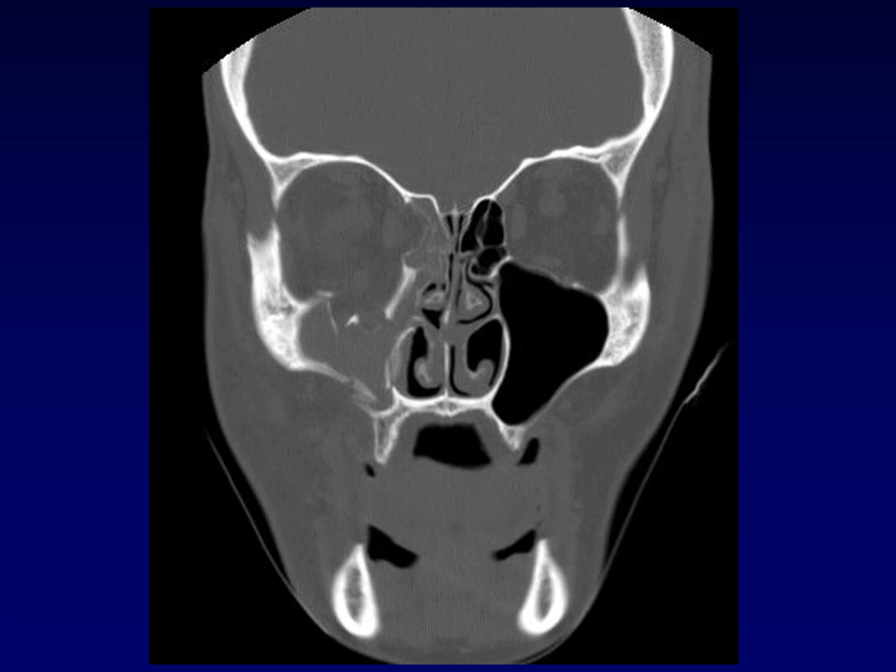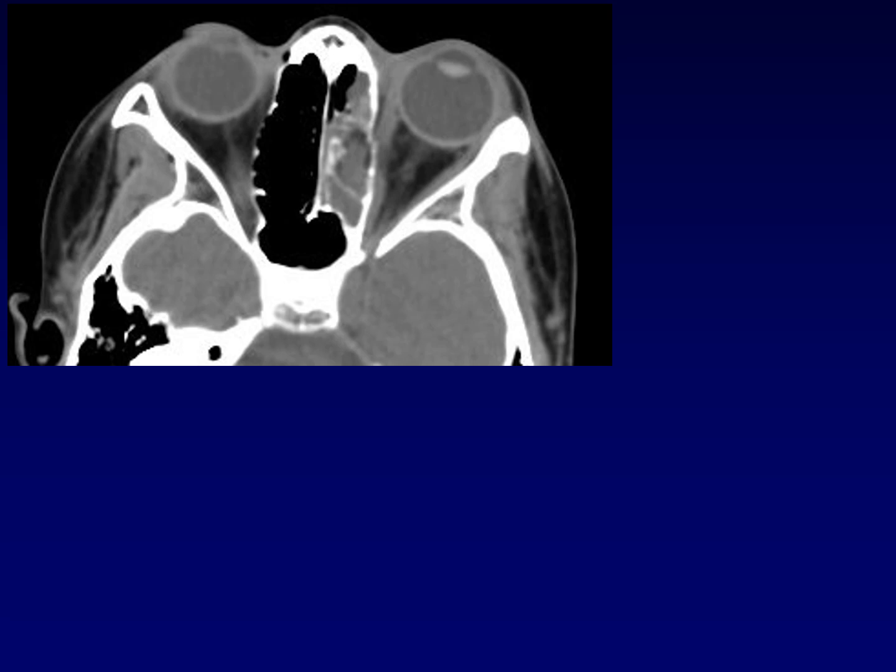Don't forget to look at the lamina papyracea — it's another common site, not as common as the floor, but another common site for blowout fractures with herniation. Be very careful looking for fat where it doesn't belong. In this example, there is blood within the ethmoid air cells, which is suggestive but not a strong indication of fracture. However, the presence of fat within the ethmoid air cells is a strong indicator of an underlying fracture, and you should look carefully for it.